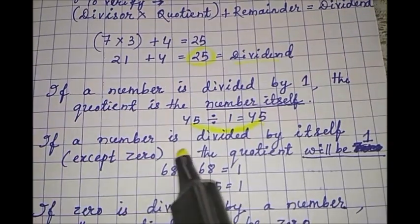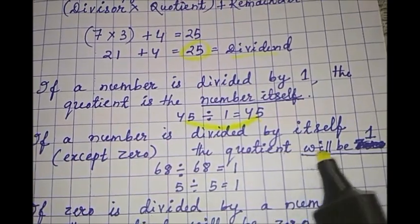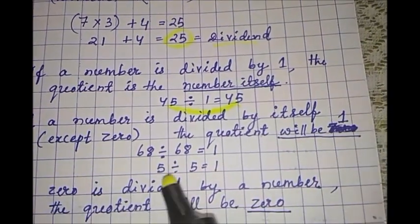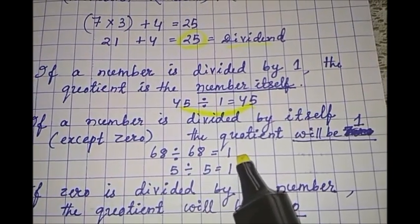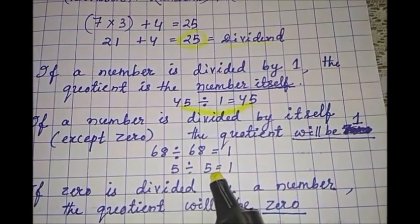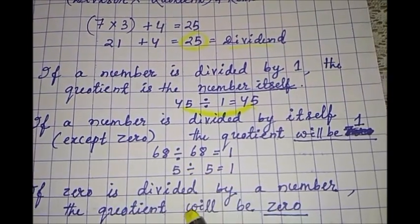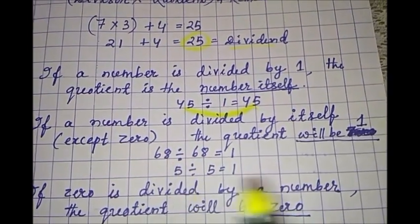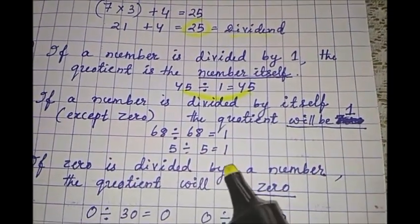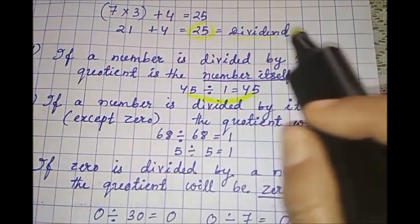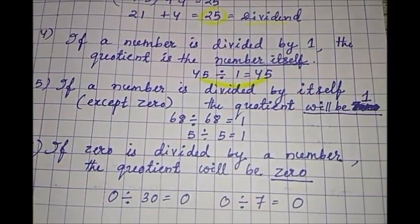If a number is divided by itself, except 0, the quotient will be 1. See, 68 is divided by 68, the quotient is 1. 5 divided by 5, the quotient will be 1. Because 5 times 1 is 5. 68 times 1 will be 68. So when a number is divided by itself, the answer will be 1. When a number is divided by 1, the answer will be the number itself.